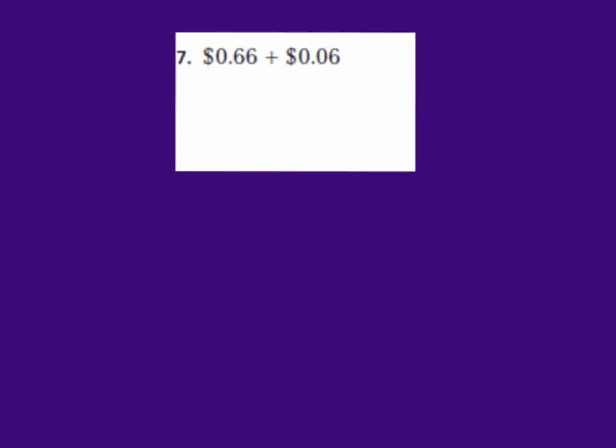Okay math geniuses, let's try number 7 on our own. We have 66 cents plus 6 cents. Don't forget that you need to change it into fraction form. Before you can add, you need to make sure that they have common denominators. And then your answer needs to be back in money form. So go ahead and try this problem. Press play when you're ready to go over the answer with me.